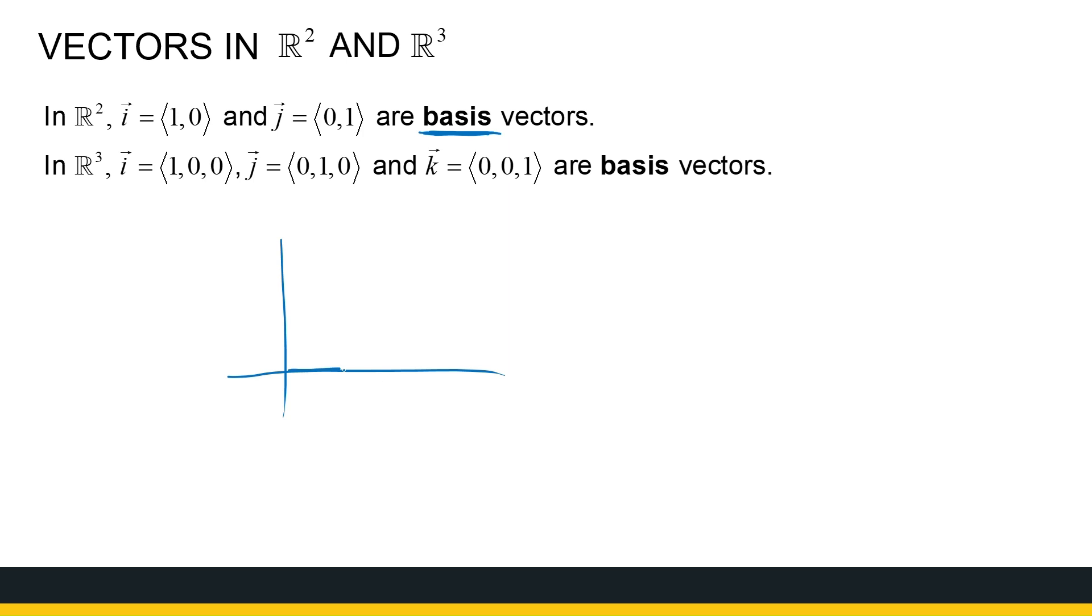So, i is a vector one unit in the x direction, j is a vector one unit in the y direction. And in R3, i, j, and k are the three vectors in the x direction, y direction, and z direction.